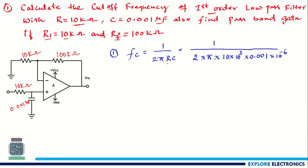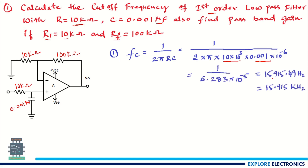Using fc = 1 / (2π RC), substitute the values: 2 × π × 10×10³ × 0.001×10⁻⁶. Calculating gives fc = 15,915.49 Hz, which converts to approximately 15.915 kHz. That is the value of the cutoff frequency.